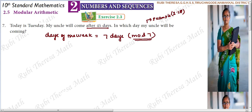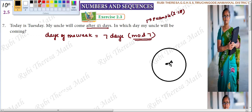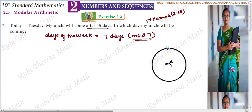So it is a Mod 7 clock. Mod 7 clock has 7 divisions: 1, 2, 3, 4, 5, 6, 7. So the numbers on this clock are 0, 1, 2, 3, 4, 5, 6. The remainder should be less than the divisor, so it stops at 6 and starts from 0.